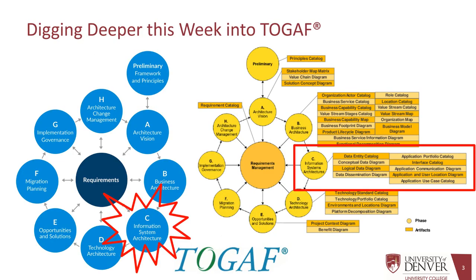Here we are in the information systems side of things. You'll see from the architecture that there are various data entities, the conceptual diagram, the logical diagram, and where the data goes in terms of how it's disseminated. Think insurance — it's going to be used by people paying claims, solving problems, adjusting fees, etc. Then all the different applications and interfaces, how they are communicated, used, and the use case for them. This is a lot of artifacts that come from this phase.